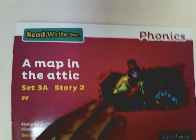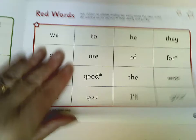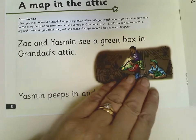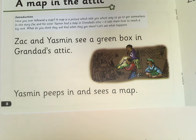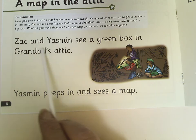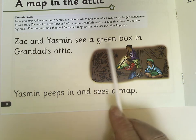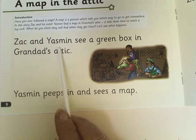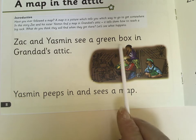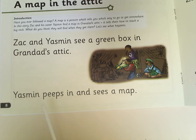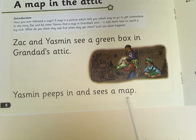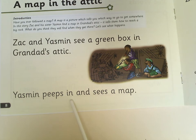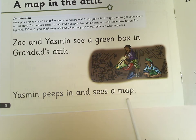Let's get back to our story: A Map in the Attic. I'm going to read a sentence and then you're going to read it back to me. Zach and Yasmin see a green box in Grandad's attic. Your go. Well done. Yasmin peeps in and sees a map. Your go. Brilliant.